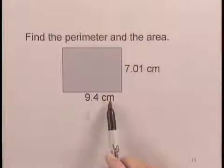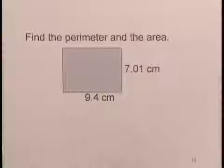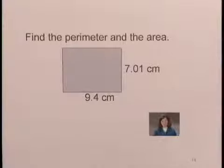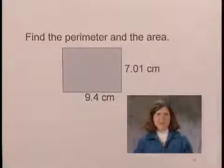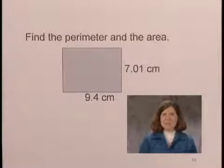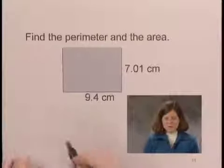We'll find the perimeter and the area of the rectangle with length 9.4 centimeters and width 7.01 centimeters. Let's start by finding the perimeter, and let's begin that process by writing the formula for the perimeter of a rectangle.